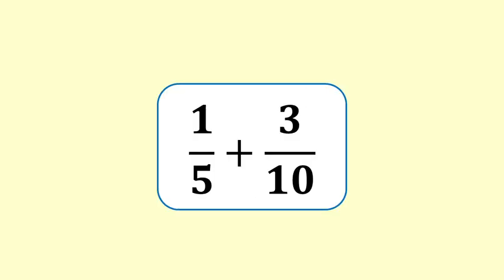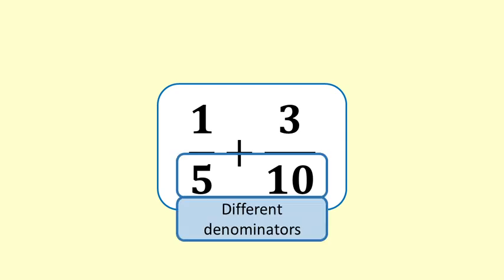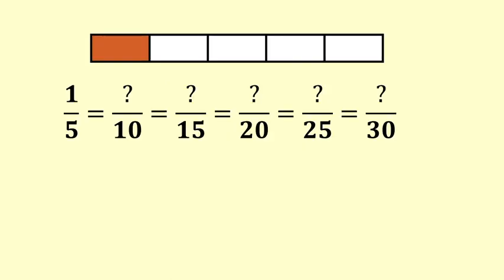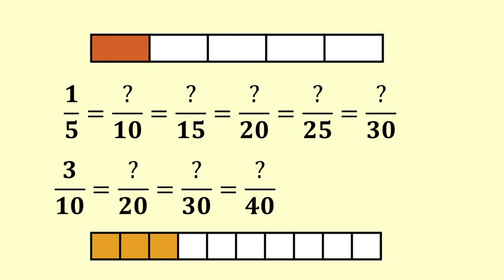We'll do another example where only one fraction will need to change. 1 fifth plus 3 tenths — 1 fifth and 3 tenths do not have the same unit. Fifths are compatible with tenths, fifteenths, and twentieths. Tenths are compatible with twentieths, thirtieths, and fortieths. Fifths are compatible with tenths, so we can use 10 or 20 as the common denominator. We choose 10 as our common denominator.